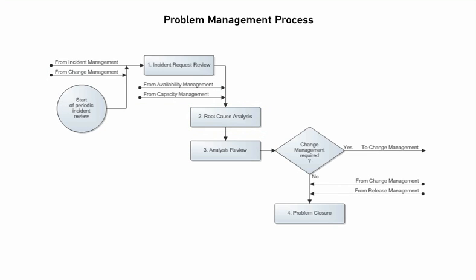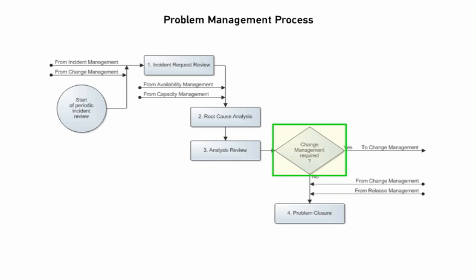When the root cause analysis is finished, the problem coordinator reviews it. If unsatisfied, they reassign the problem investigation for further analysis. If the problem is resolved, the problem coordinator closes the investigation — also closing it if the specialist performed a sound analysis but couldn't propose a structural solution. If the specialist proposed a structural solution but didn't implement it because a change is required, the problem coordinator confirms this, then generates a known error and passes it to the change coordinator of the affected service, starting the change management process.